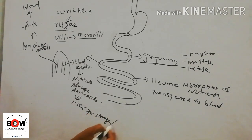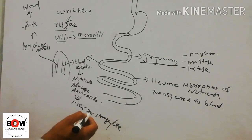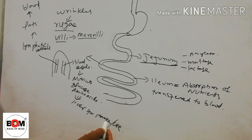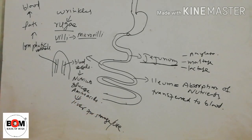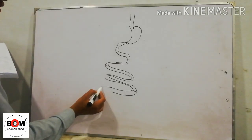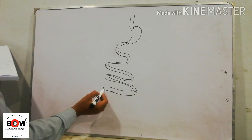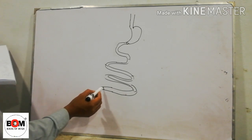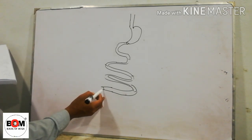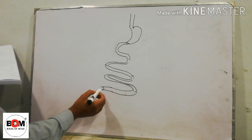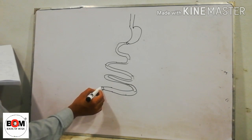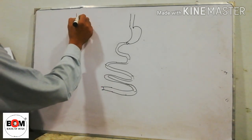Inside the liver, the glucose is either converted to glycogen or used for energy. The ileum ends at the ileocecal valve. The unabsorbed food, which is waste, is transferred to the large intestine.